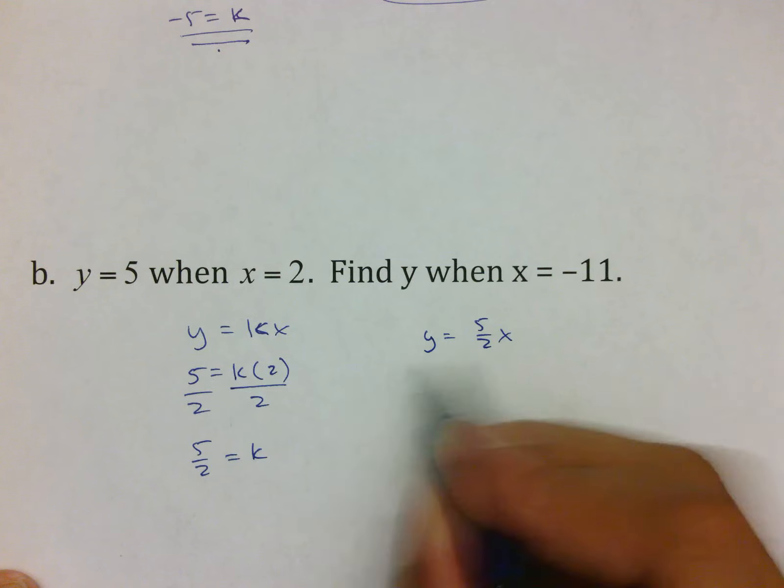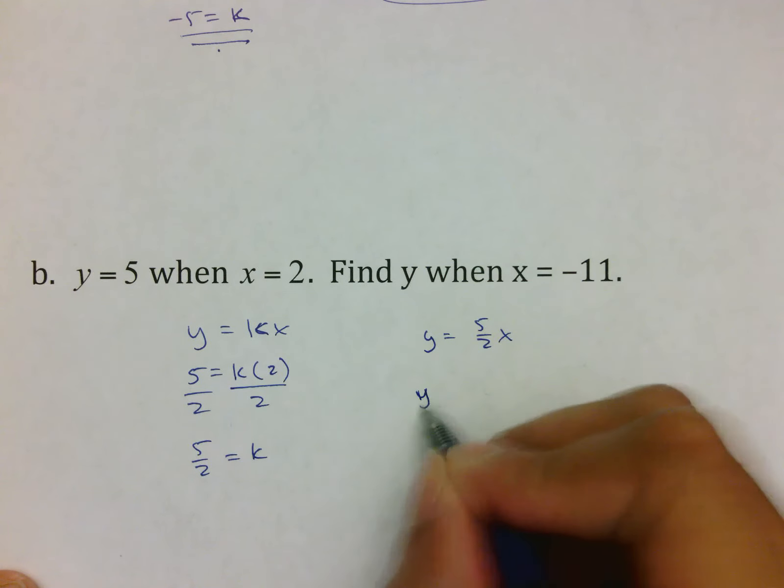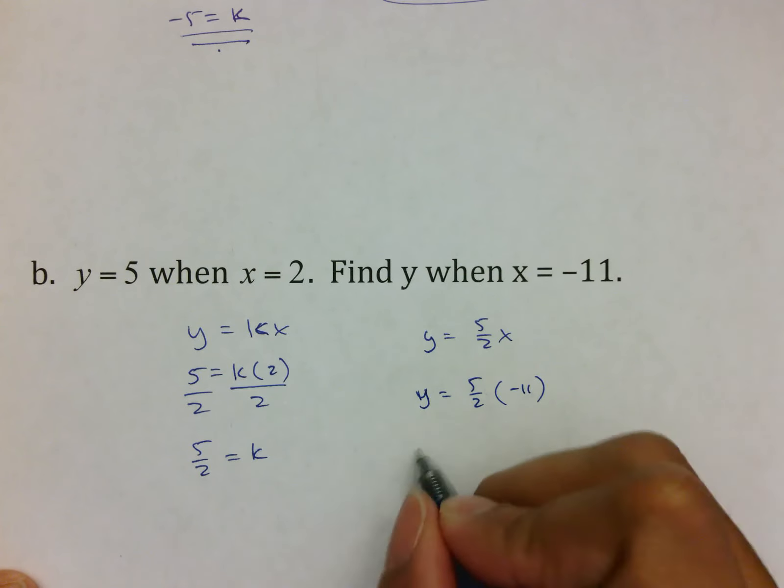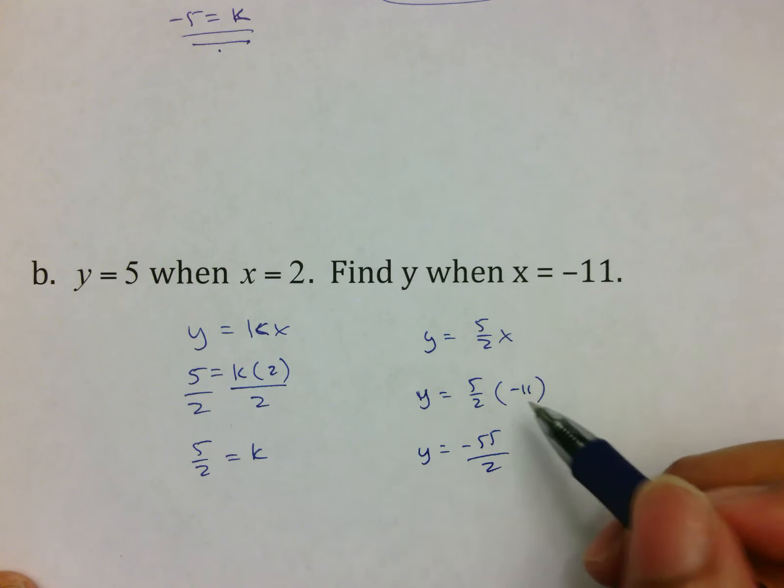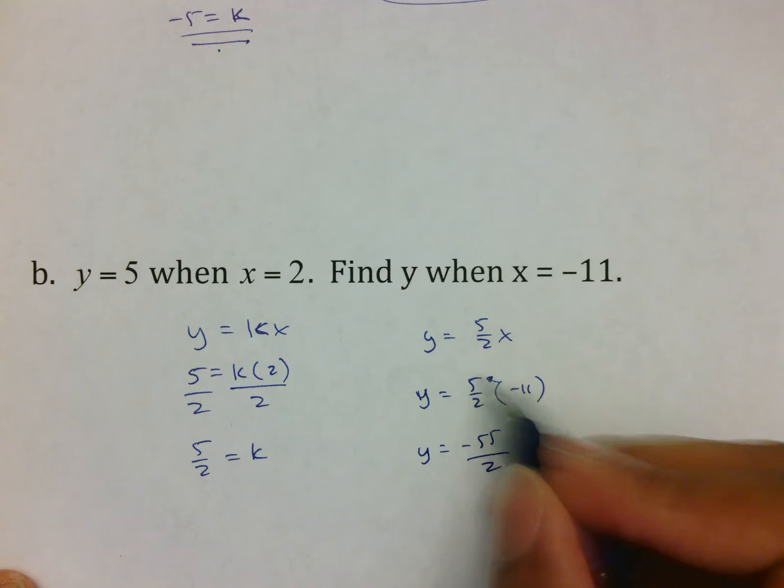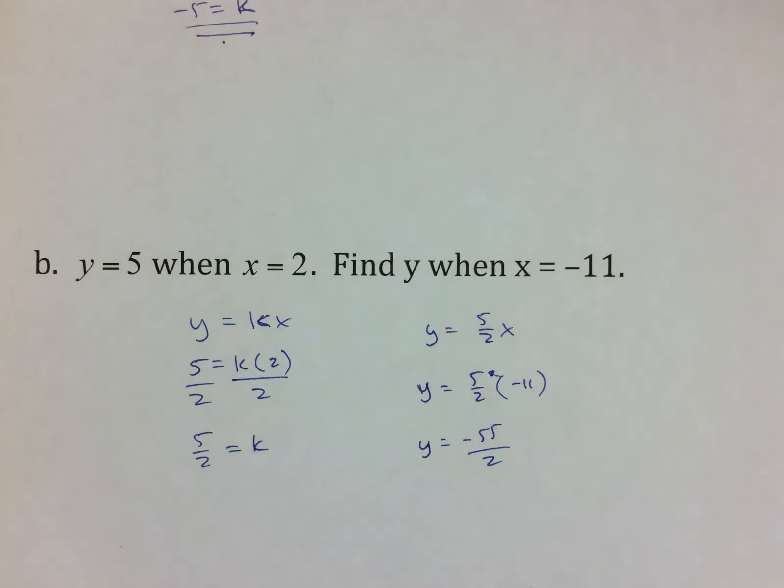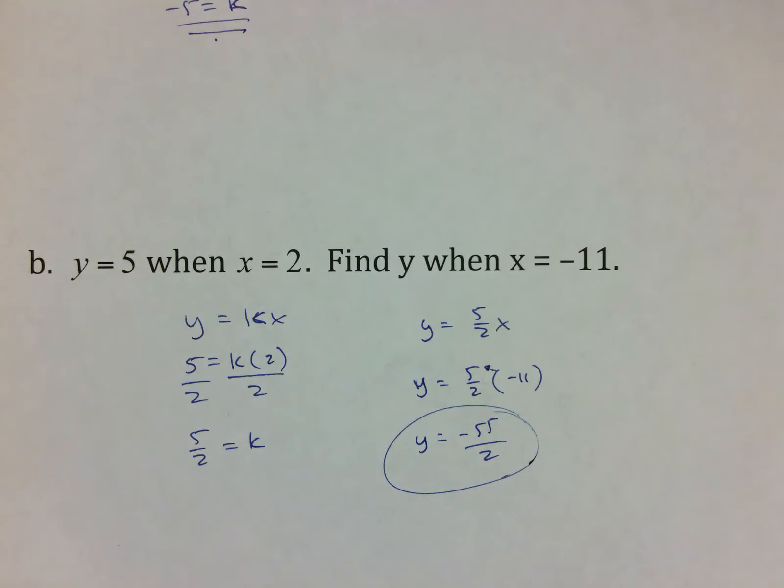Which is y equals 5 over 2x. That is the formula there, or the equation. And then we take 11 and plug it in, which means that you end up with -55 over 2. Just so you know, whenever you multiply a whole number by a fraction, you pretty much just multiply it to the top, leave the bottom alone, and simplify if possible. 55 over 2 is as far as you can go. That is your final answer. We did the job to find k. We plugged in k. We used k to find y. That is all.